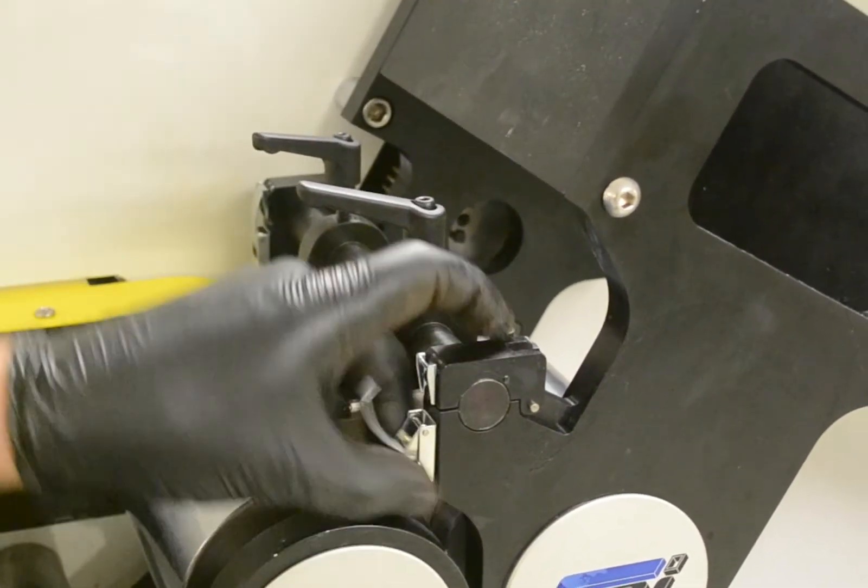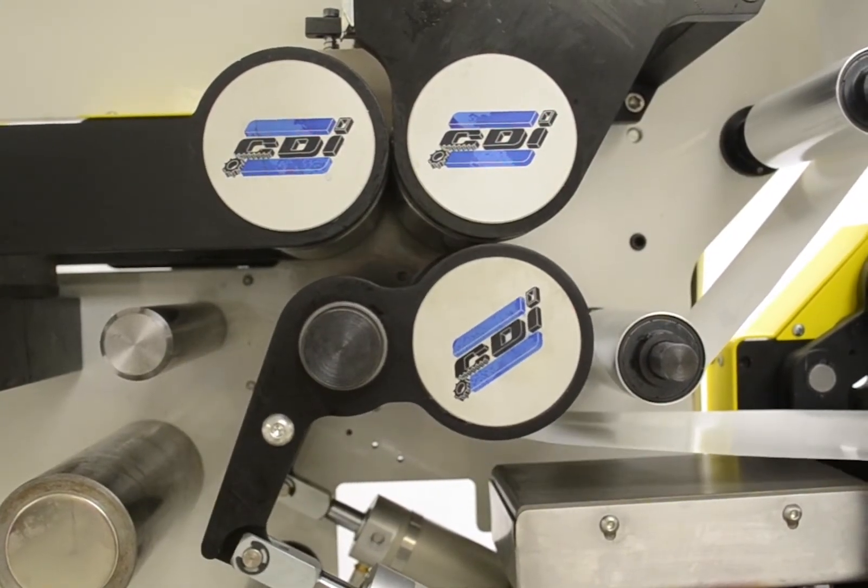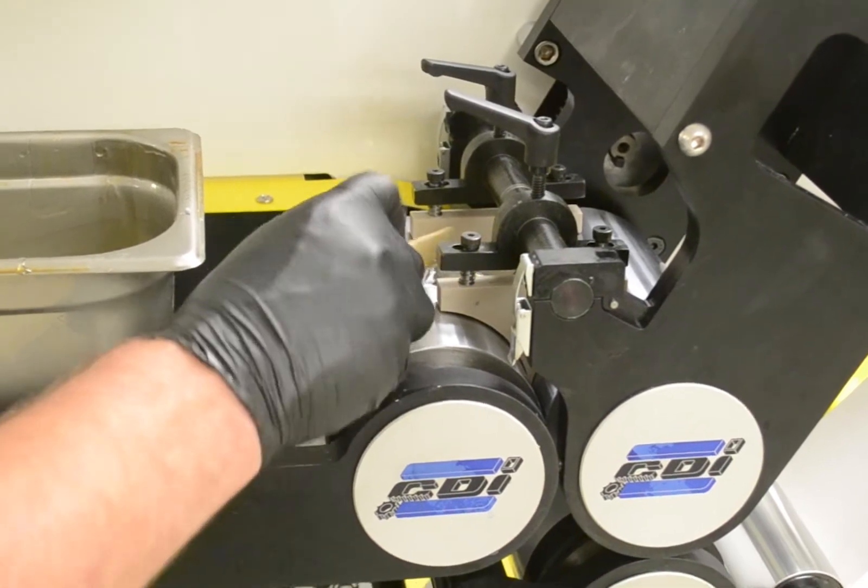The resin application can be done in three ways: manually applied as shown in the video, very straightforward process. You can also use meter and mix systems if the volume dictates it.